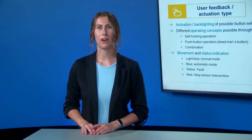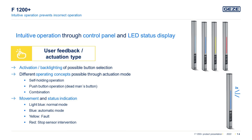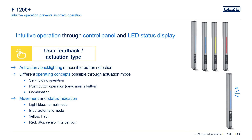Depending on the desired operating concept and security requirements, different operating modes can be selected for the three buttons. With a self-retaining operating mode, the drive is brought to the desired end position by pressing a button once. With push-button operation, also called dead man's button, the button must be held permanently until the desired end position is reached — releasing the button stops the drive. A combination of push-button and self-retaining modes allows automatic switching of operation.